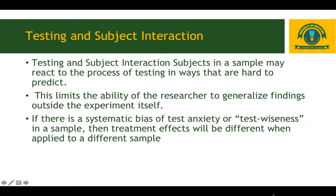The third threat is testing and subject interaction. Subjects in a sample may react to the process of testing in ways that are hard to predict, which limits the researcher's ability to generalize findings outside the experiment. If there is a systematic bias such as test anxiety or test-wiseness in a sample, then treatment effects will be different when applied to a different sample. Test-wiseness means that the subjects understand the test situations, systems, and procedures, and can effectively use them, which reduces the measured treatment effects.